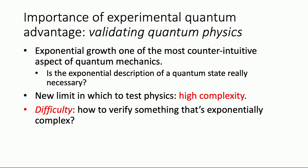Experimental quantum advantage gives us a new limit in which to test physics — the regime of high complexity. But there's an incredible difficulty: how do we verify something that's intrinsically exponentially complex, and how do we do that efficiently, preferably on a classical computer, if we don't trust our quantum computer? I think this might be the enduring legacy of the entire subject area. Even after everyone agrees that quantum advantage has been achieved, the tools we're building to verify and benchmark these near-term high-complexity quantum systems will be with us indefinitely.